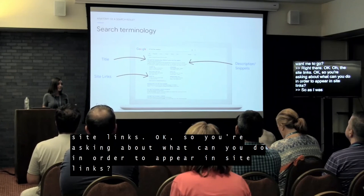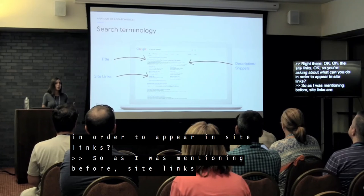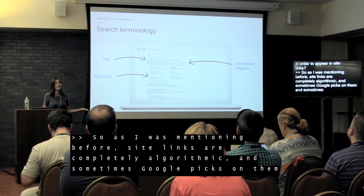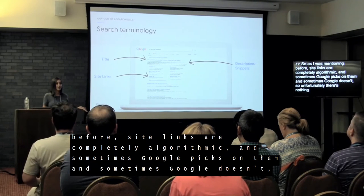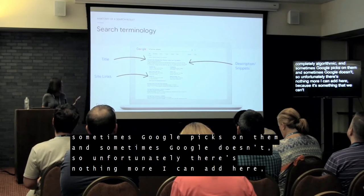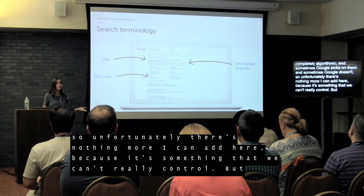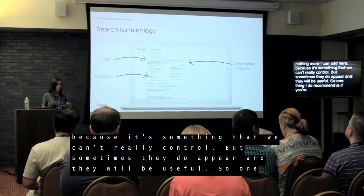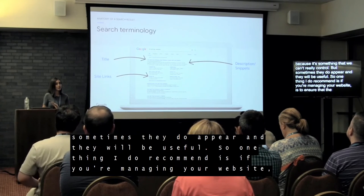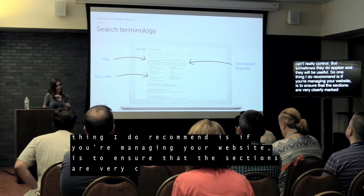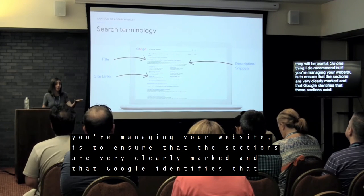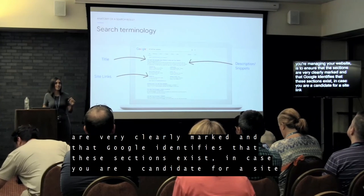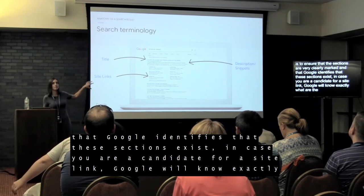Site links are completely algorithmic — sometimes Google picks them up and sometimes it doesn't. Unfortunately, there's nothing I can add that lets you control that directly. But one thing I recommend is to make sure the sections of your website are very clearly marked so that Google can identify them. That way, if you're a candidate for site links, Google will know exactly which sections are most relevant to highlight.